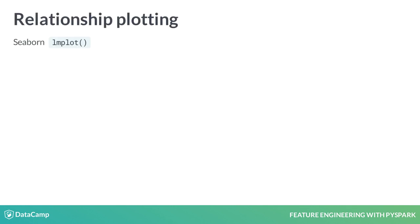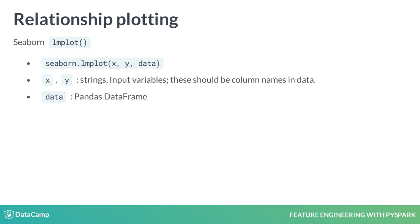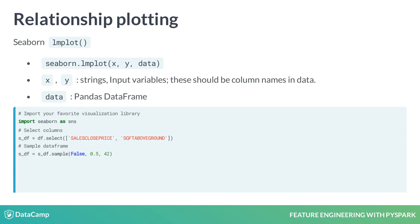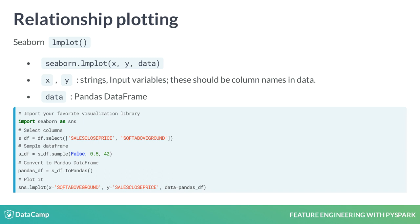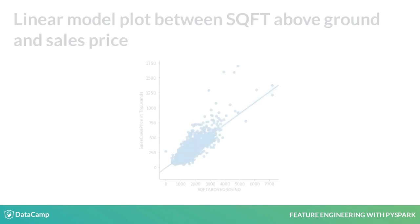Another great plot to use is Lmplot. LM is short for linear model and allows us to quickly see if there is a linear relationship between two variables. For this example, we will look at how SalesClosePrice changes depending on square footage above ground. To do this, we will import Seaborn, filter our dataset to the two columns, sample it, and convert it to a Pandas data frame. Lastly, use the sns.lmplot function with our X and Y columns and the data frame. Here we can see that there is what looks to be a strong relationship between the size of a home and the price it sells for.